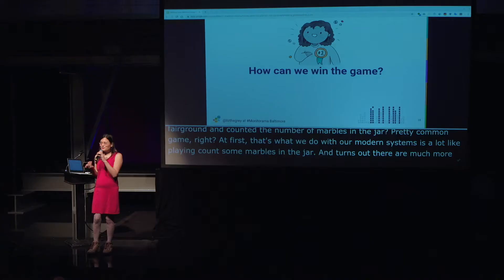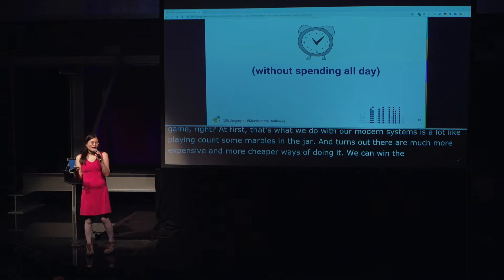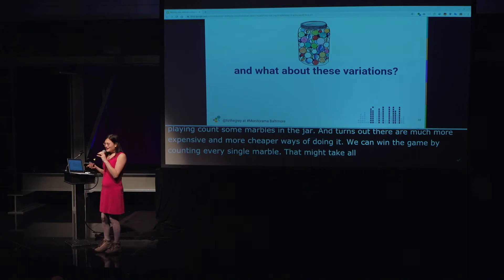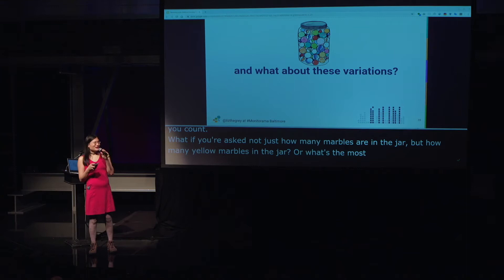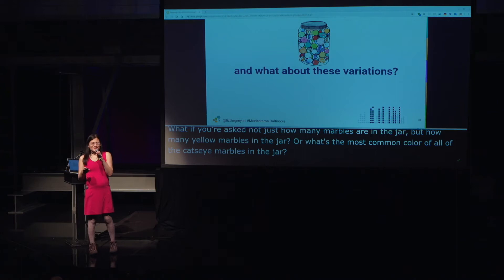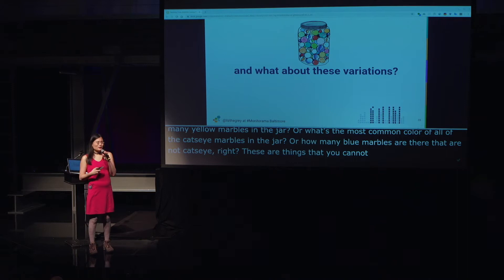Let's use this marble analogy and compare to what we do with our modern systems today. How many of you have seen the fairground game: count the number of marbles in the jar? What we do with our modern systems is a lot like playing count the marbles in the jar. And it turns out there are much more expensive and much cheaper ways of doing it. We can choose to win the game by counting every single marble, but that would take all day. What if you were asked not just how many marbles are in the jar, but how many yellow marbles, or what's the most common color of all the cat's eye marbles? These are things you cannot get by doing one straight categorization — we often have to ask dynamic, complicated queries to answer our system's data.